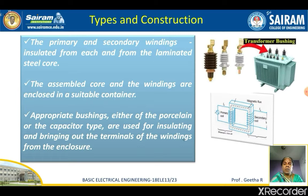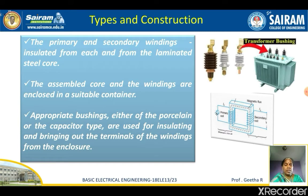Now we will look at the different types of transformers and their construction details. The primary and secondary windings are insulated from each other and also from the laminated steel core. The vertical portions of the core are called limbs and the horizontal portions are called the yoke. The primary coil is wound on one limb and the secondary coil on the other, both insulated from each other and from the core. The assembled core and windings are enclosed in a suitable container, with bushings used to bring out the terminals.